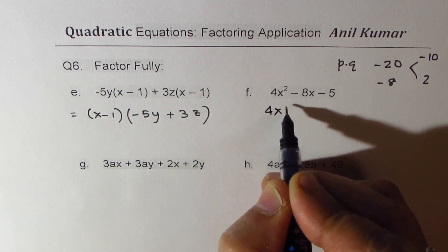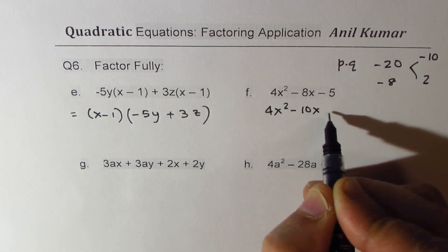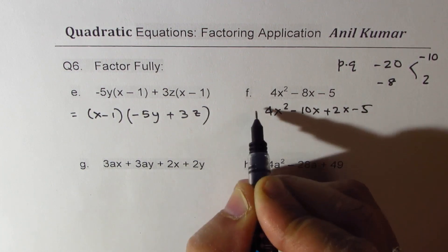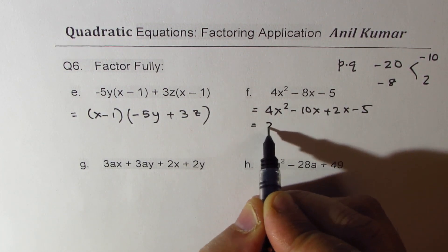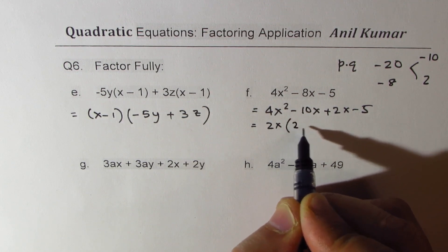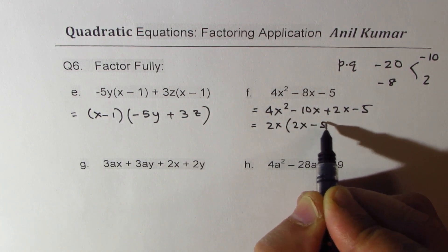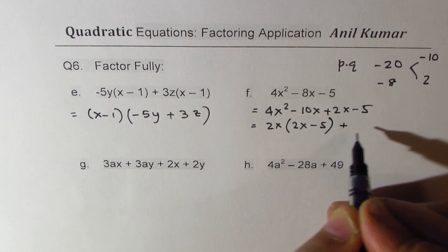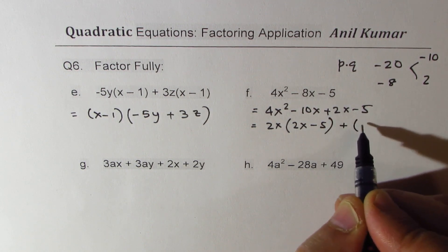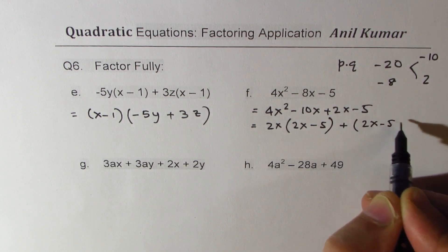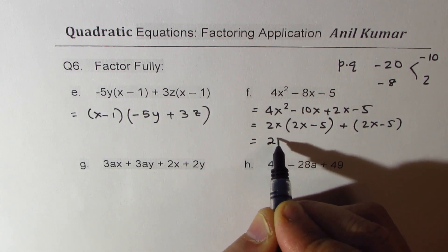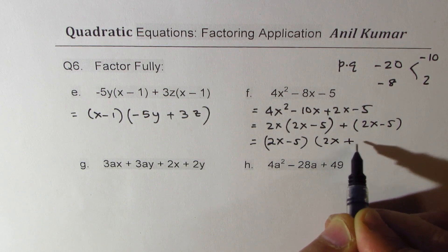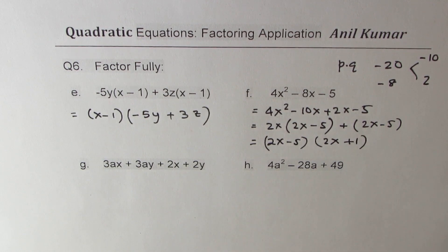We write this as 4x² - 10x + 2x - 5. We take 2x common from the first pair to get (2x - 5), and from the second pair 1 is common, also giving (2x - 5). So we have (2x - 5)(2x + 1) as the two factors.